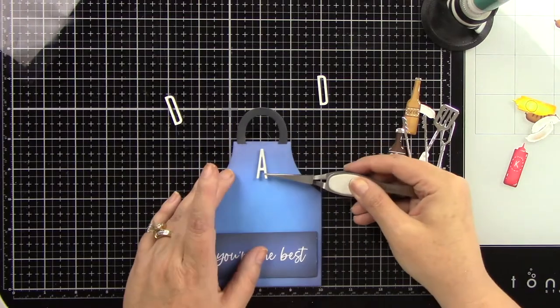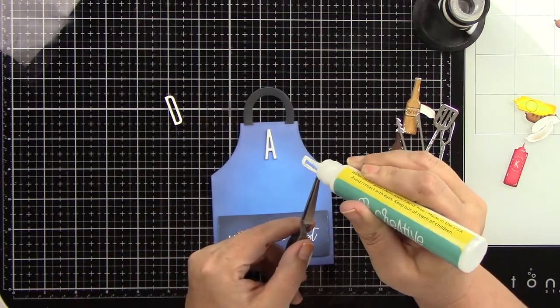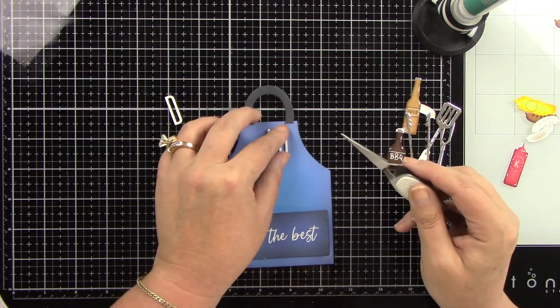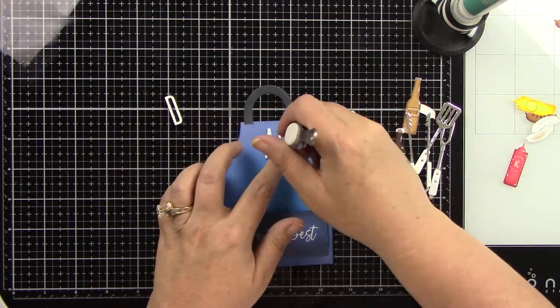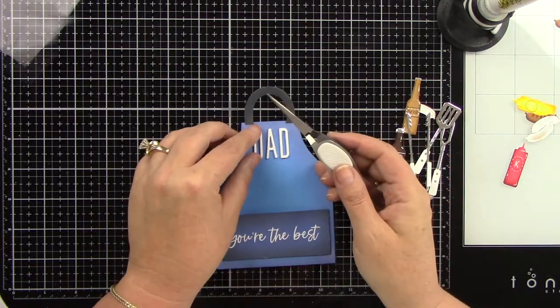I'm going to start with the A and just kind of center that at the top. I'm just eyeballing it. You could definitely take out your ruler and measure this. I'm really not a measurer unless I absolutely have to. So I'm just using some liquid glue and adhering that down.